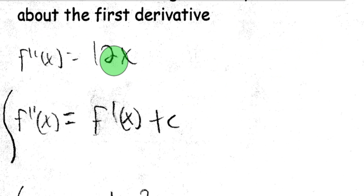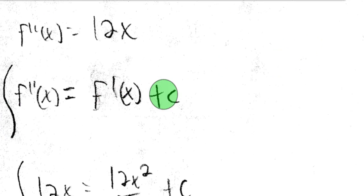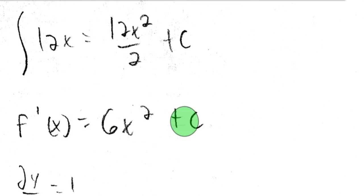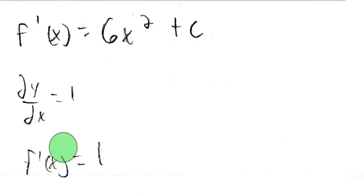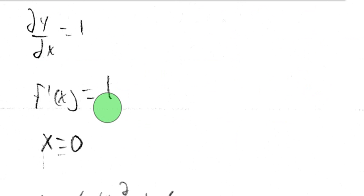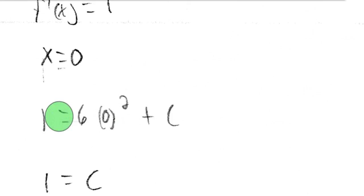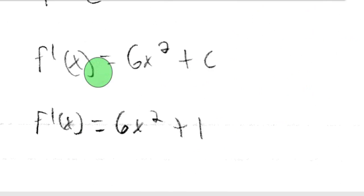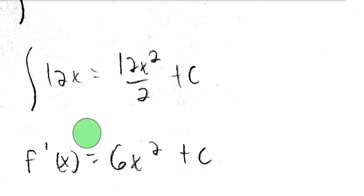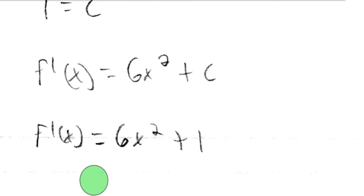So here's the second: f double prime of x equals 12x. If we take the antiderivative, we'll get the first derivative plus c. The antiderivative of 12x is 12x squared over 2 plus c, which simplifies to 6x squared plus c. We were given the initial value of (0, 1), so f prime of x must equal 1 when x equals 0. Plugging in 0 for x and 1 for f prime of x, we get c equals 1. So f prime of x equals 6x squared plus 1. Step 1 is finding the first derivative.